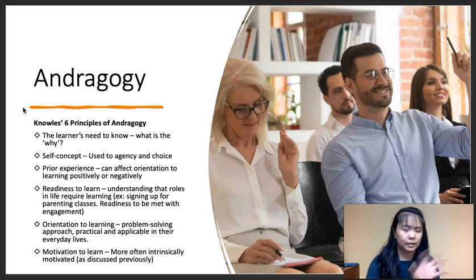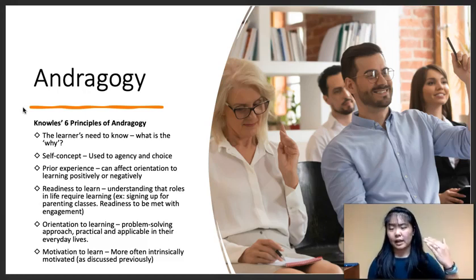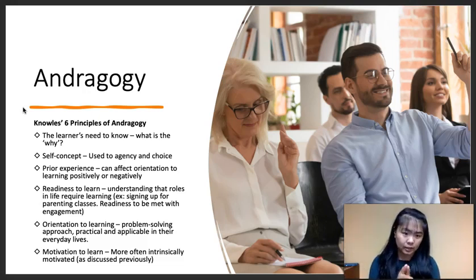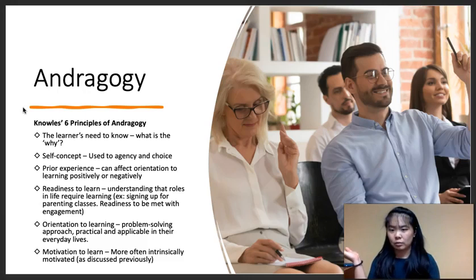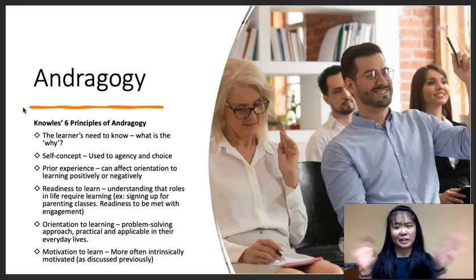The fifth principle is orientation to learning: adults tend to be very driven to solve a specific problem with knowledge gained from class, so they need practical and applicable examples and situations to work through. This helps engage them with content and solidify learning. The sixth principle is motivation to learn: adults typically have internal structures to intrinsically motivate themselves, unlike children who often respond to external rewards like stickers or frequent praise.